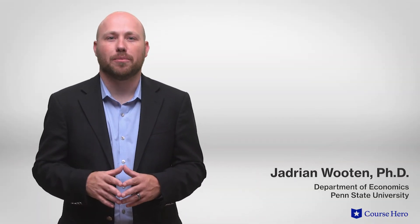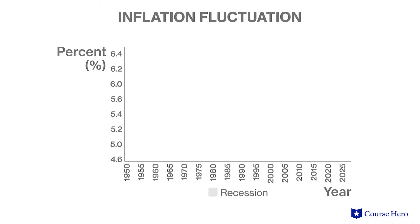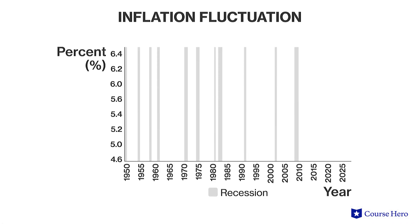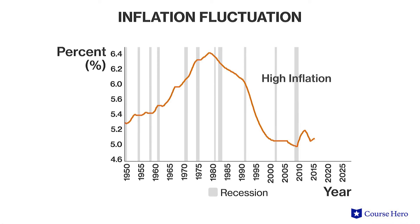During an inflationary gap, the economy is in a short-run equilibrium with output higher than the full employment level. The main consequence of this circumstance is inflation at levels higher than desired. High inflation can occur, for example, when unemployment is low and the economy is growing rapidly.